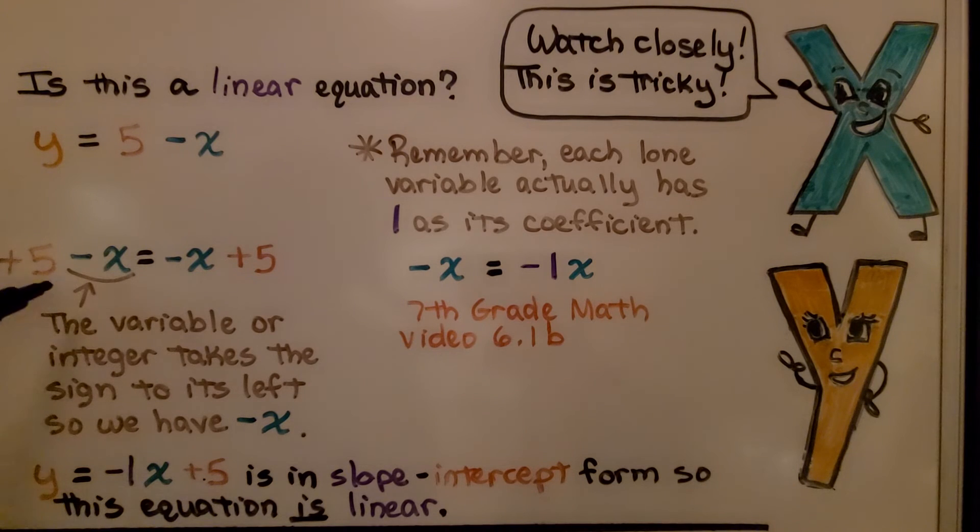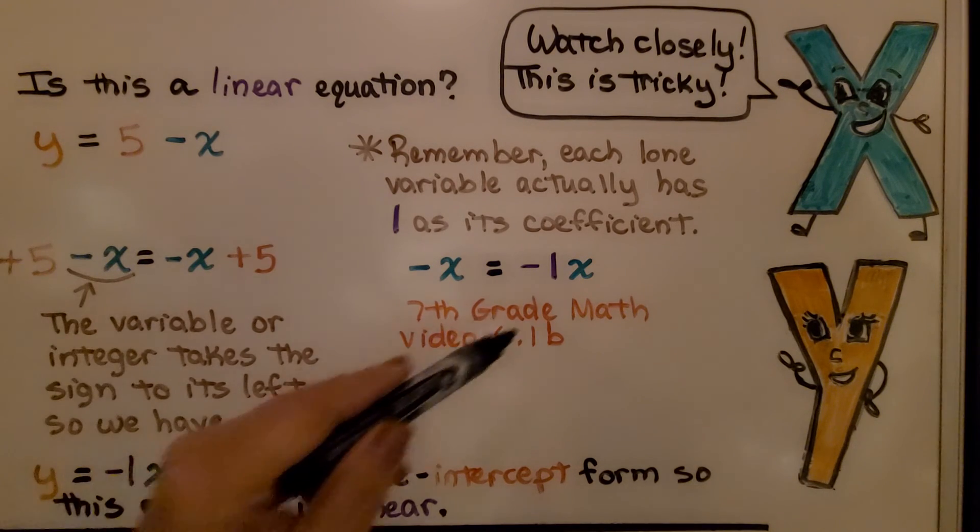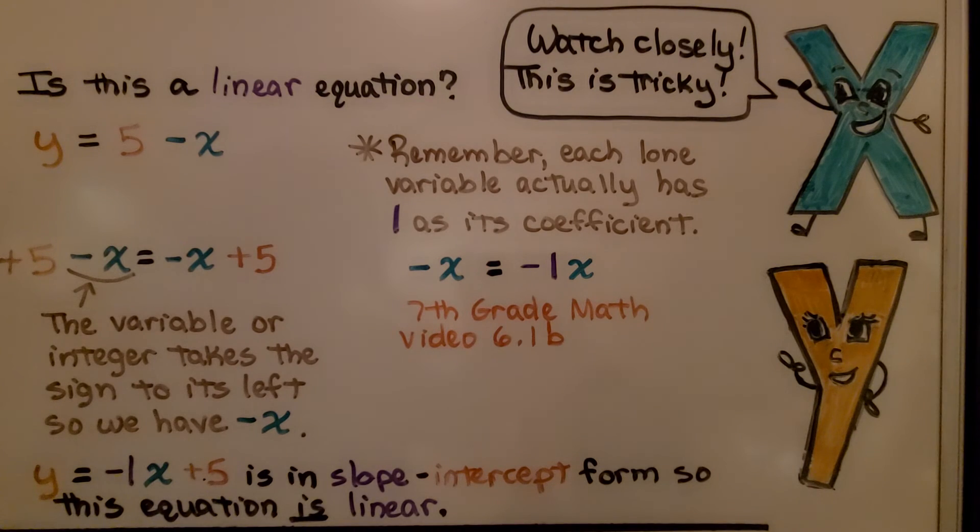So this equation is linear. Just remember that the sign to the left of the variable or integer goes with that variable or integer. So this makes it a negative x, a negative 1x. Then we're just adding 5 to it. We've got our equation.